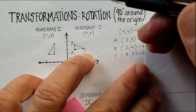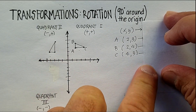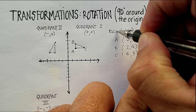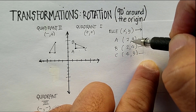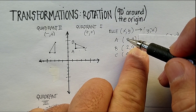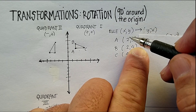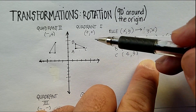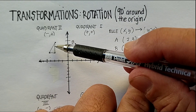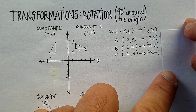Now let's learn how to mathematically determine the new coordinates for this new triangle. The rule is: you take the x and the y and swap them. You move the y to where the x is, and the x to where the y is, then you make the new x value negative. Notice that in the first quadrant both values are positive, while in the second quadrant the x value is negative and the y value is positive.